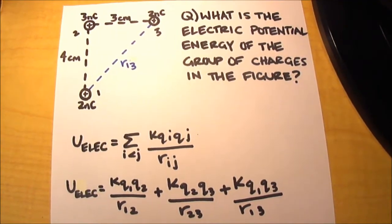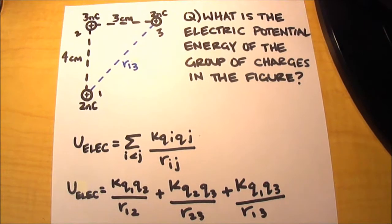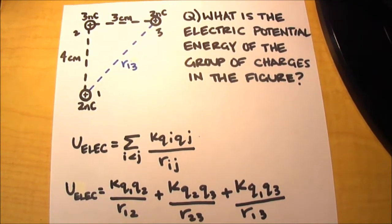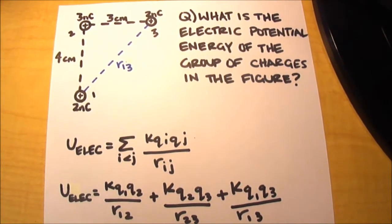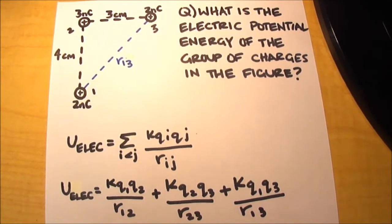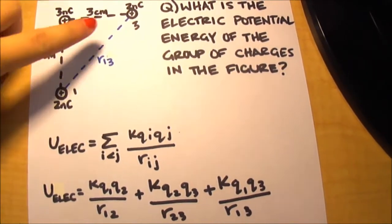Now to solve this, we'll need the value of each charge as well as the distance between each of them. As you can see from the diagram, we already have all of the charges and most of the distances. However, we need to find the distance between charge one here and charge three here.